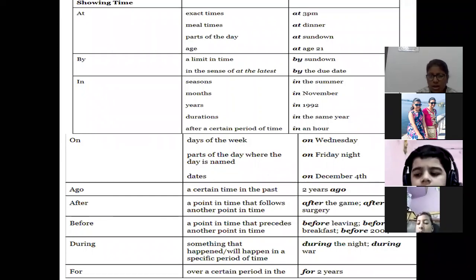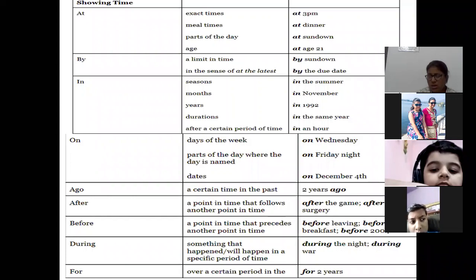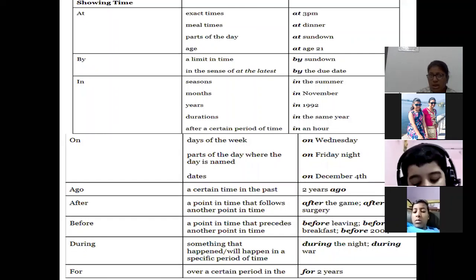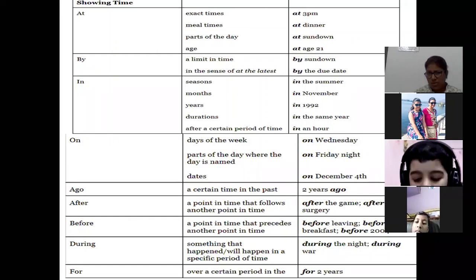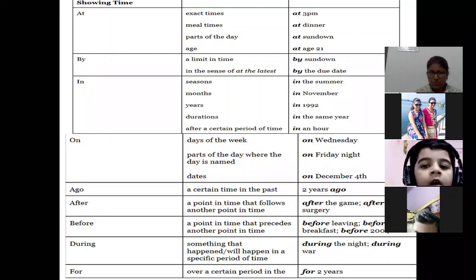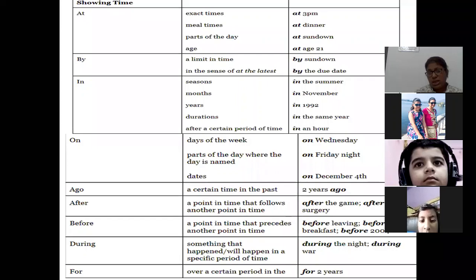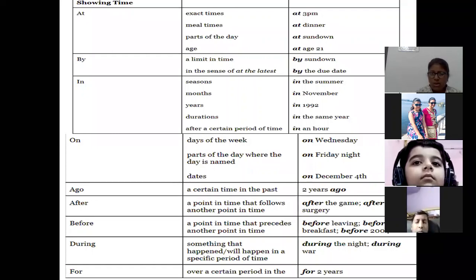'In' is used for showing time — for seasons: in the summer; for months: in November; for years: in 1992. For duration: in the same year, or after a certain period of time: I will complete my work in an hour. 'On' is already studied but we'll go through it — when you want to speak about days of the week: I will complete my work on Wednesday.